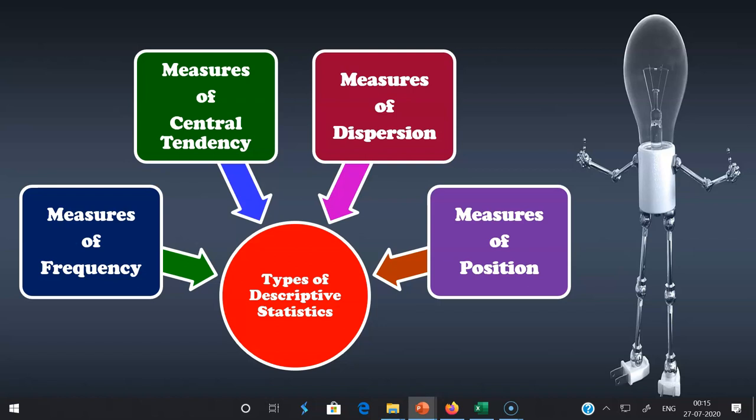The third type is measures of dispersion or variation. It consists of range, variance, and standard deviation. It identifies the spread of scores by stating intervals. It is used when we want to show how spread out the data are, and it is helpful to know when our data are so spread out that it affects the mean.